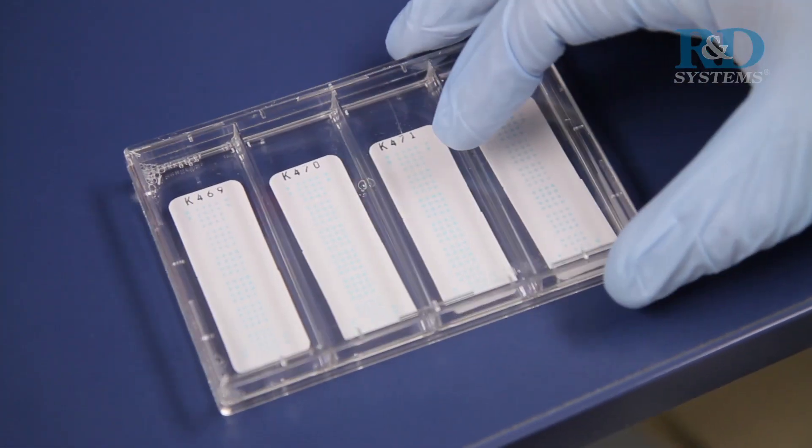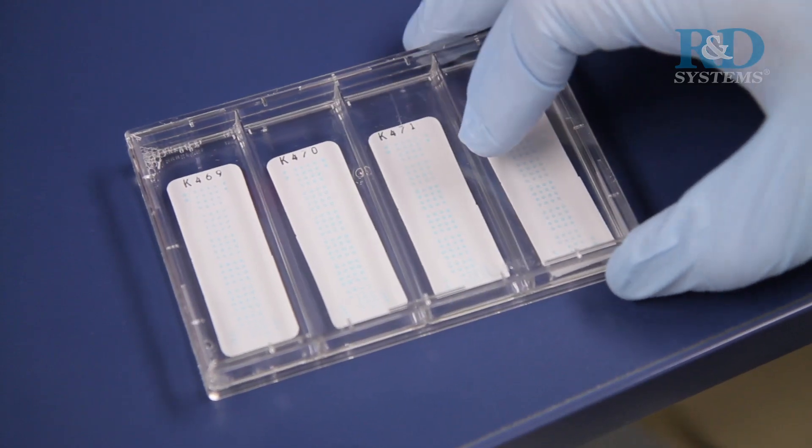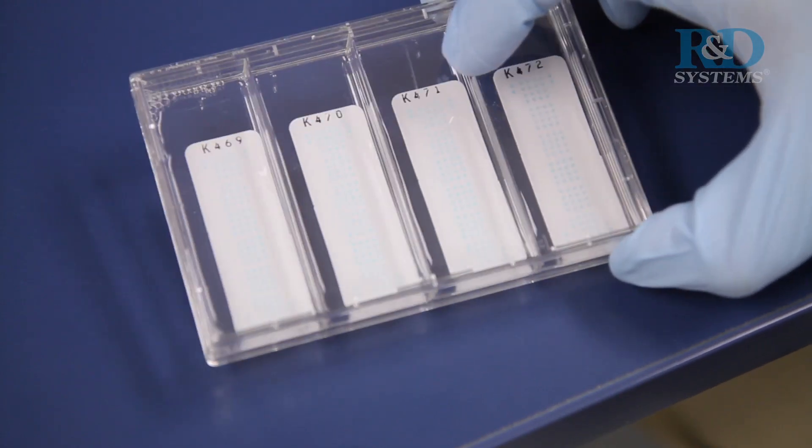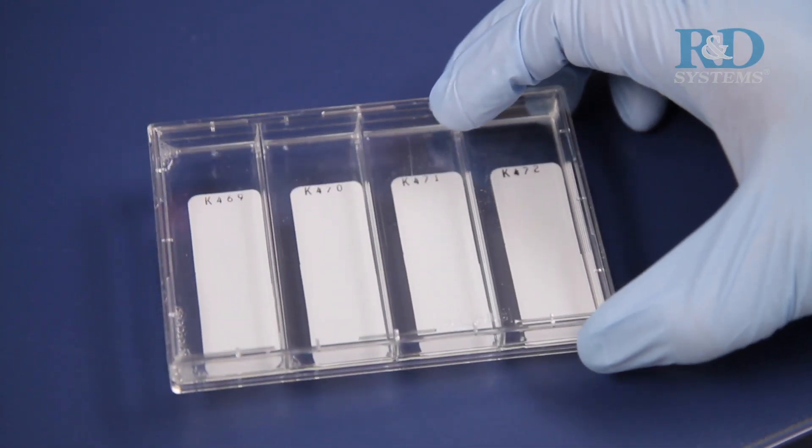Upon contact with array buffer 1, the blue dye from the spots will disappear, but the capture antibodies are retained in their specific locations.